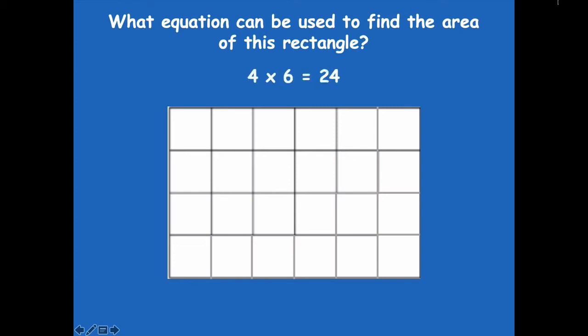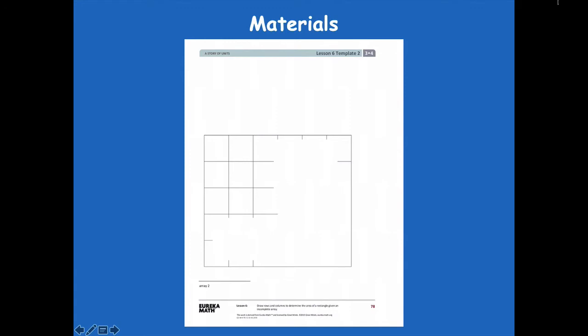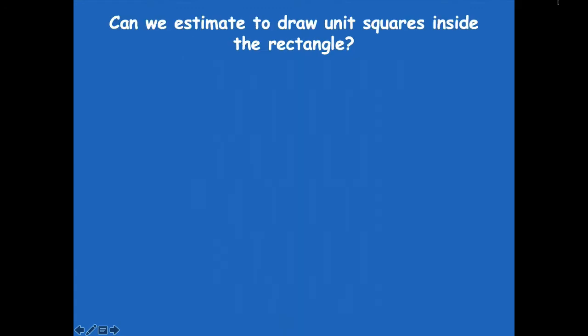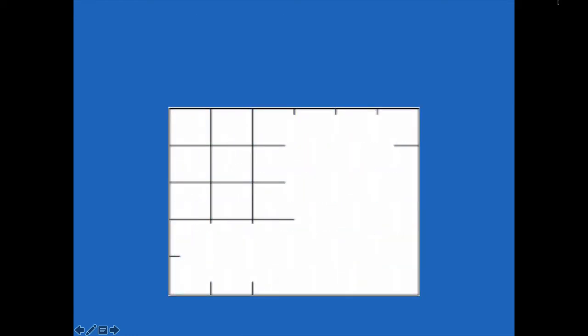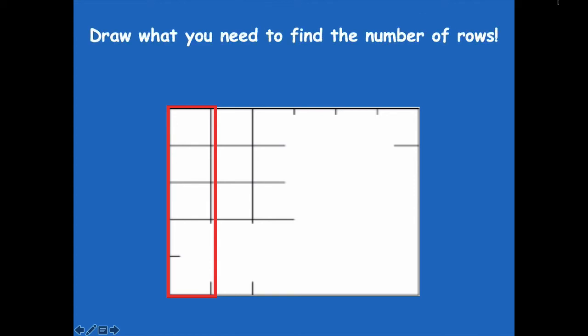All right, so now we need this one, lesson template two. Grab that. All right, can we estimate to draw unit squares inside the rectangle? Yeah, we sure can. Let's start by finding the number of rows in our array. We have five in a row, or five rows.